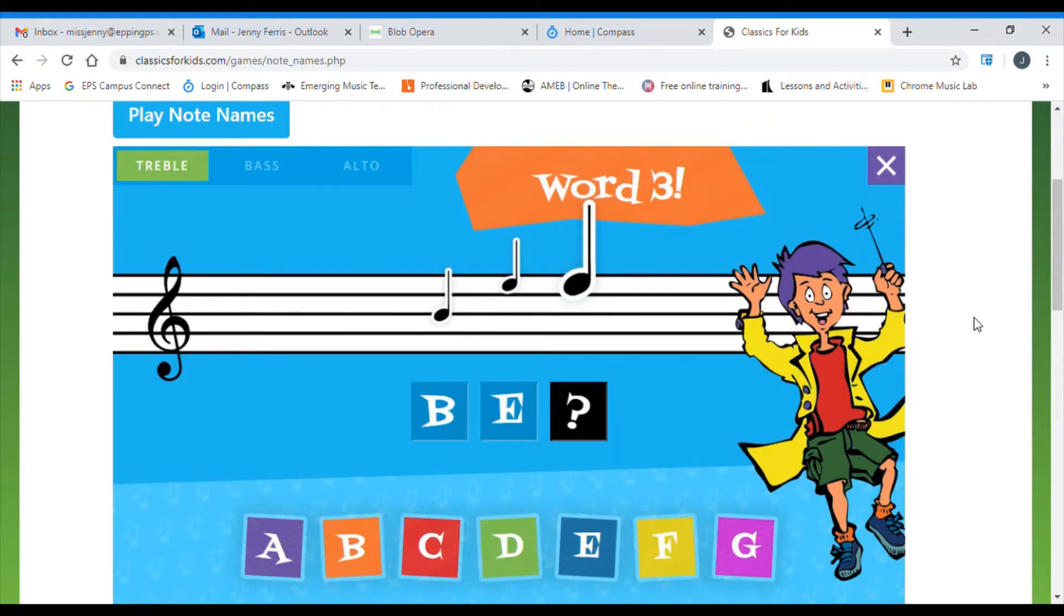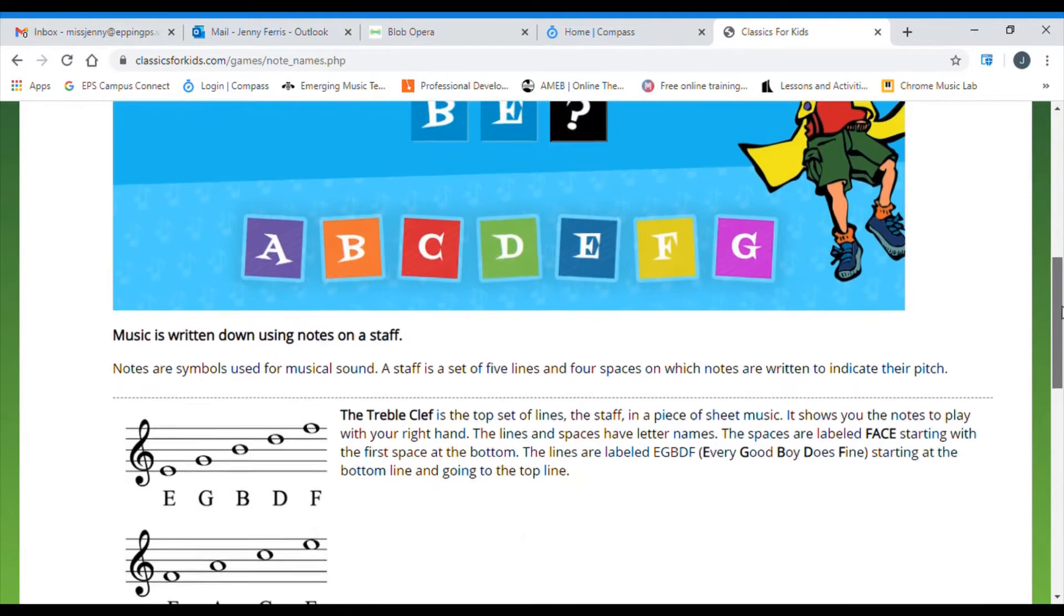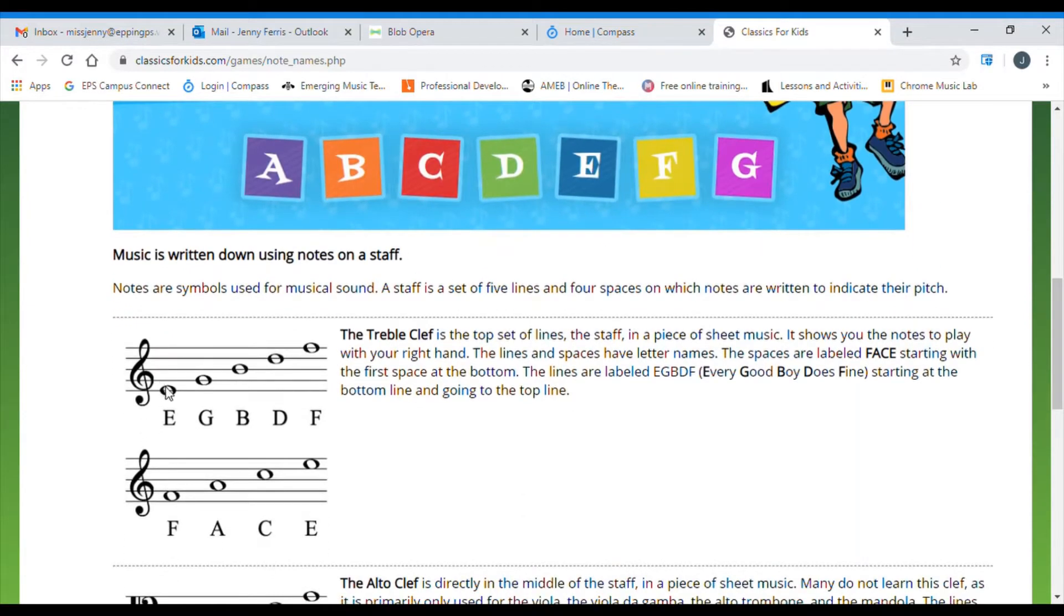This week in Performing Arts, we are going to do a stave spelling game using the Classics for Kids website. When you first click on the link, you'll be taken to a website that looks like this. If we scroll down a little, there's a quick explanation of how different notes are written on our stave. We're going to be exploring the treble clef today, which is a symbol that looks like this.